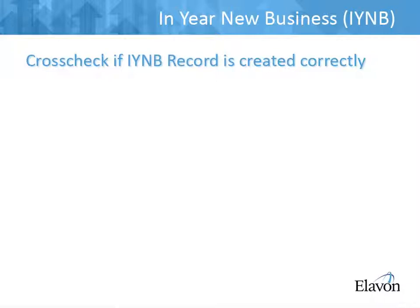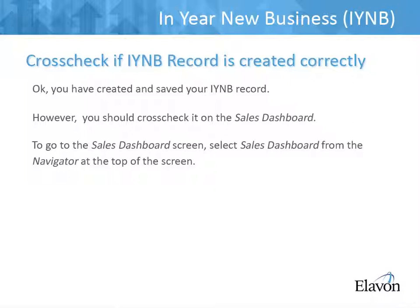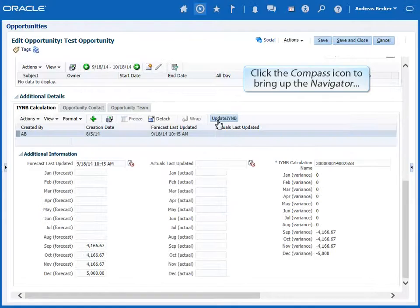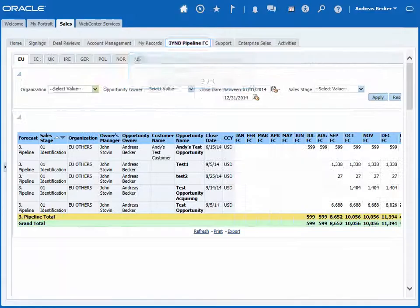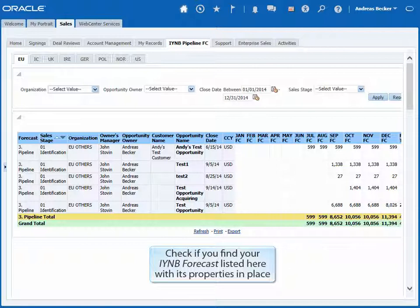Cross-check if the IYNB record is created correctly. So you have created and saved your IYNB record. However, you should cross-check if it really has been properly created and saved. In order to do that, go to the Sales Dashboard by selecting Sales Dashboard from the Navigator at the top of the screen. Click the Compass icon to bring up the Navigator and select Sales Dashboard. On the Sales Dashboard, select the IYNB Pipeline FC tab. Check if you find your IYNB forecast listed here with its properties in place.